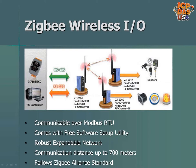ZigBee is a wireless specification that operates over the 2.4 GHz band. It was designed to create personal area networks with low data rates and uses small, low powered radios. ZigBee devices are set up with a free software utility and can communicate up to 700 meters. Our devices follow the ZigBee Alliance standard so they can be used with other vendor devices that also follow the ZigBee Alliance standard. Our ZigBee products support Modbus RTU communication. With ZigBee communication, the converters act as a repeater and repeat the signal onto the next node in the network.